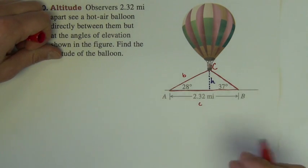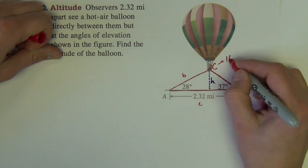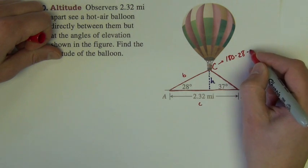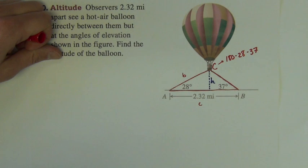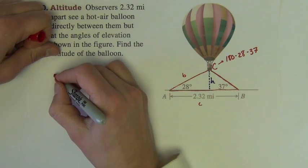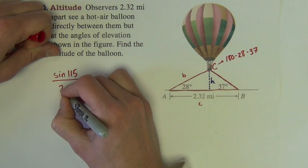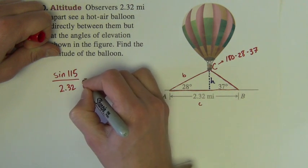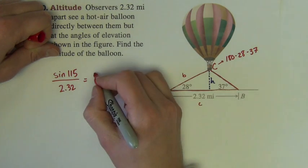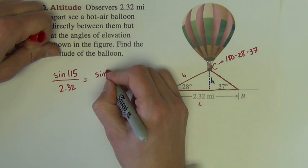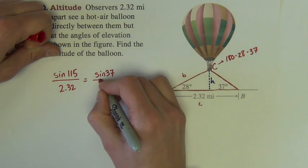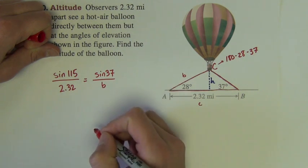So, let's see, I would need angle C. Angle C is 180 minus 28 minus 37. So, that would be sine of 115 over 2.32, and if I'm going to find little b, I need sine of angle B over little b.